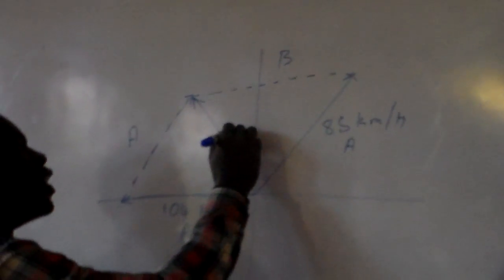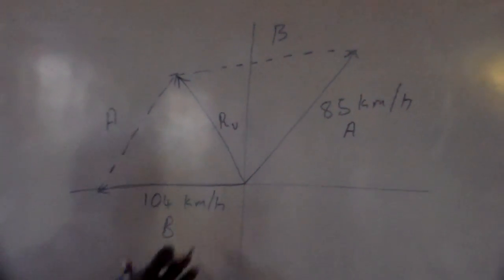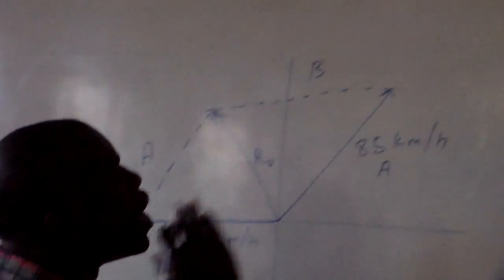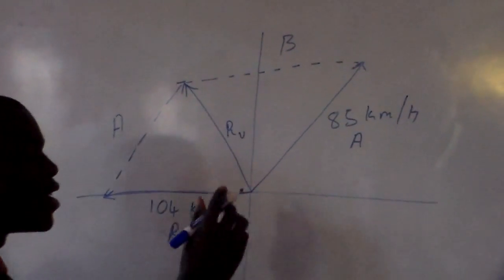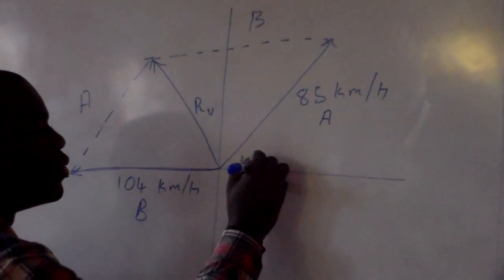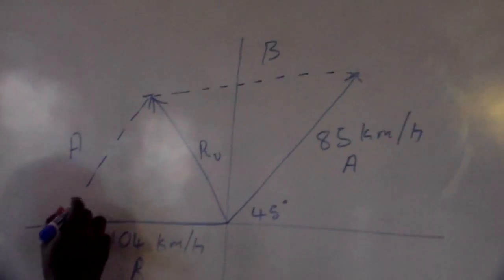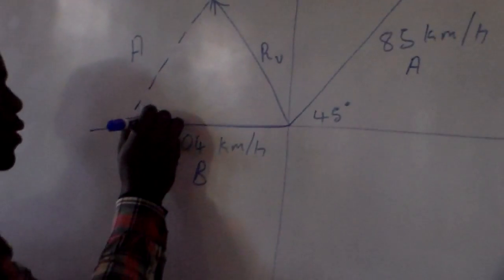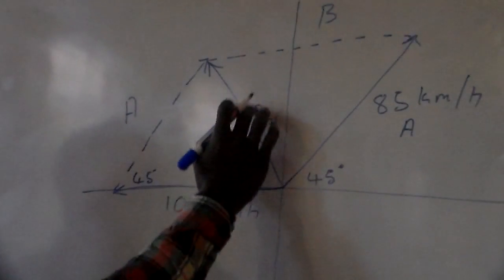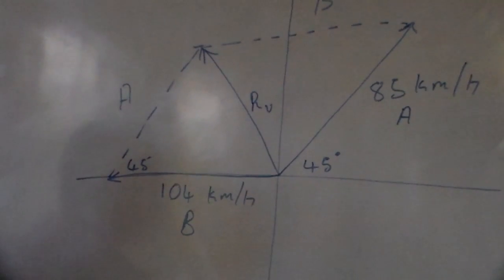The diagonal represents our relative velocity. Since vehicle A moves directly north-east, it is at 45 degrees — in between 0 and 90 degrees. This line is parallel to the other, and the angle here is also 45 degrees. We want the resultant of the relative velocity, so we need to use the cosine rule.